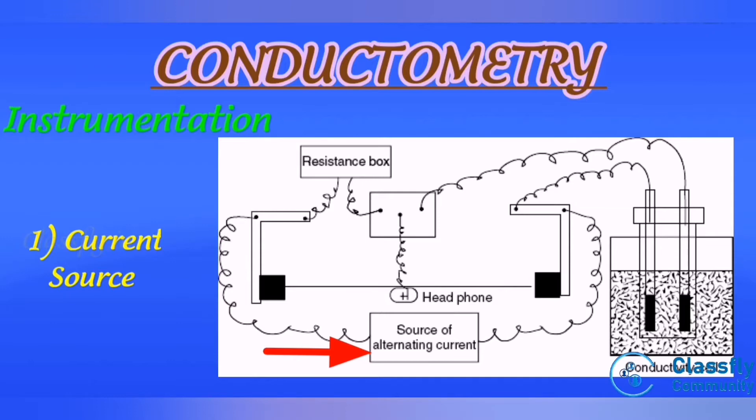Second one is conductivity cell, made of Pyrex or Cortex, fitted with two platinum electrodes. It should be placed in a vessel containing water to maintain constant temperature. Types are: first one, void-mouthed cell; second one, cell for reaction producing precipitation; third one, dip type cells.